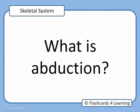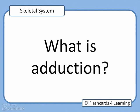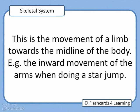What is abduction? This is the movement of a limb away from the midline of the body. For example, the outward movement of the arms when doing a star jump. What is adduction? This is the movement of a limb towards the midline of the body. For example, the inward movement of the arms when doing a star jump.